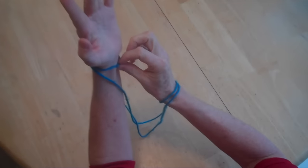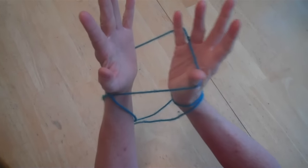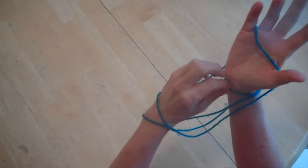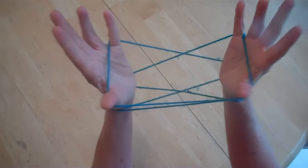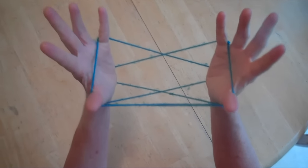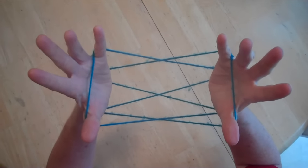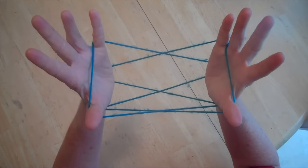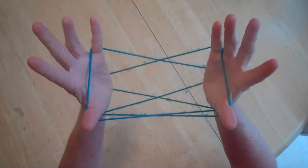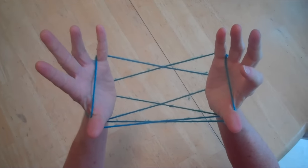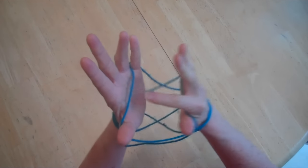Now you're going to pick up the string on your wrist with your thumb and pinky on both sides. Next, you're going to do sort of like opening A. With your pointer finger, reach over and grab your palm string from each palm.